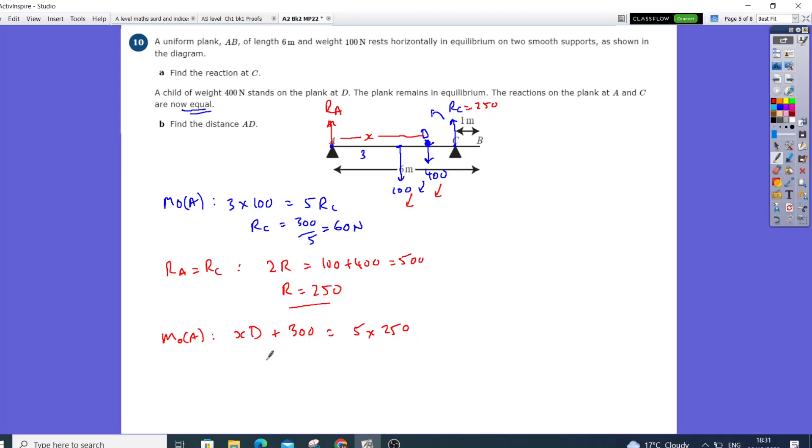Okay, so if we times this out, we've got DX equals, well that's going to be 1250, take away the 300,